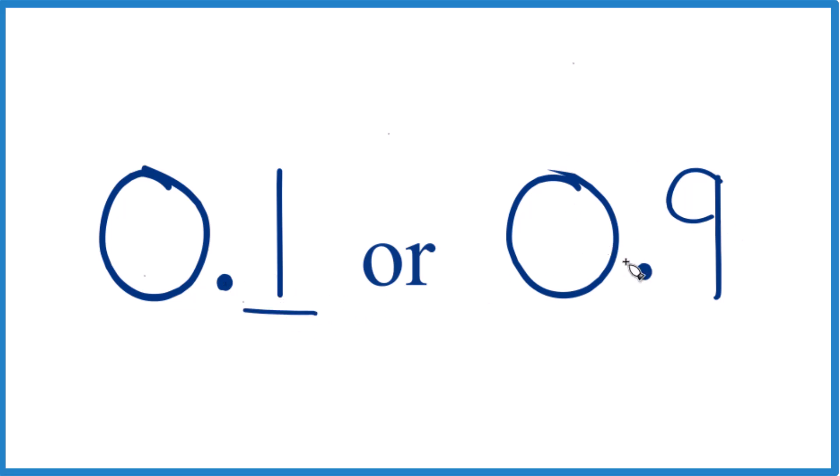Here we have 0.9, so the number in the tenths place, that first number after the decimal, is 9. 9 is greater than 1, so we know that 0.9, that's going to be greater than 0.1.